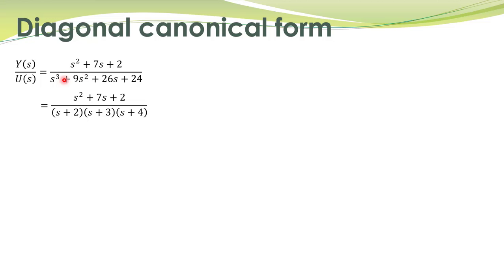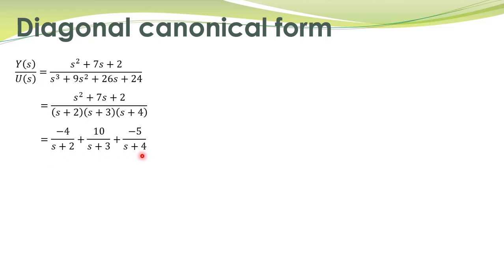We have factorized the denominator polynomial as (s+2)(s+3)(s+4), and next we obtain the partial fraction expansion given here. This transfer function equals this expression. You already know the procedure to obtain this partial fraction expansion, and you can verify by adding all these terms that you get the same transfer function.